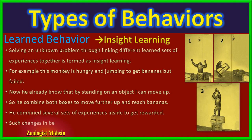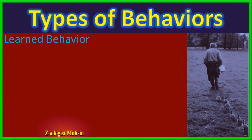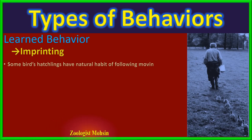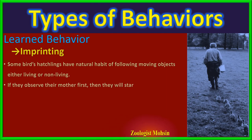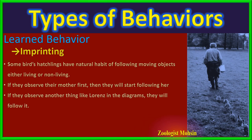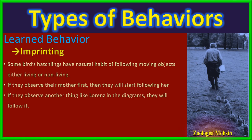The next type is a very interesting form of learning shown by bird hatchlings that usually live with their mothers. Some hatchlings or young birds newly hatched have a natural habit of following moving objects that they see first of all after hatching — this may be any living thing like a mother or Lorenz in the diagram, or even non-living things like a rolling ball. Such behavior is called imprinting. This behavior is not shown by all birds, especially those which live in nests without parental care and learn to fly by falling from the nest.